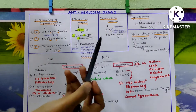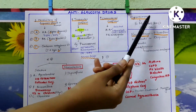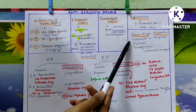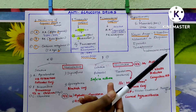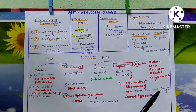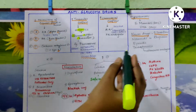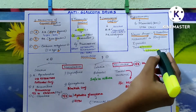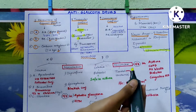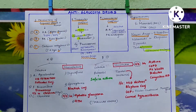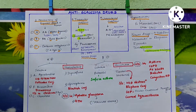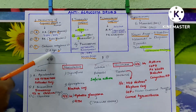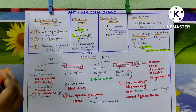For hyperosmotic agents, IV mannitol is used, and urea can also be used. For newer drugs, just remember the names. Regarding trabadenosin — in the name itself the mechanism is hidden: it is an adenosine analogue. Natarsidyl is also important to remember. Now coming to the alpha agonist class in detail.